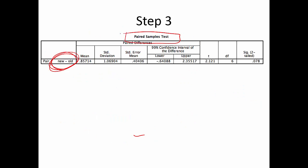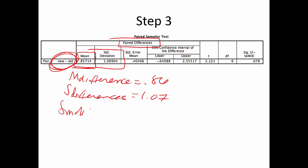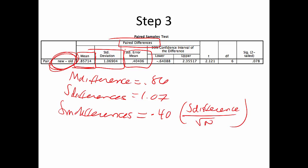Step three: all the numbers come from the paired samples box in SPSS — make sure you're using the paired samples test output. List the mean difference, which is 0.86. The standard deviation of the differences — which is different from independent T — is 1.07. The standard error of the differences is 0.40. That formula is still S-difference over the square root of N.